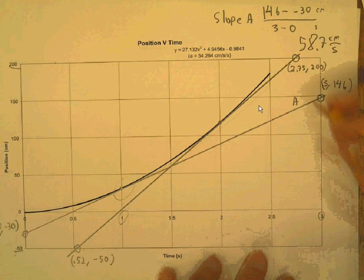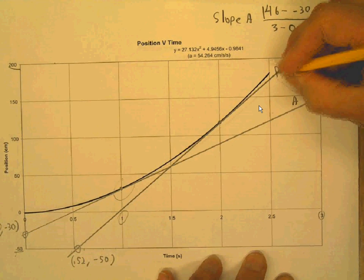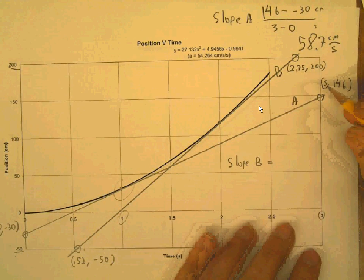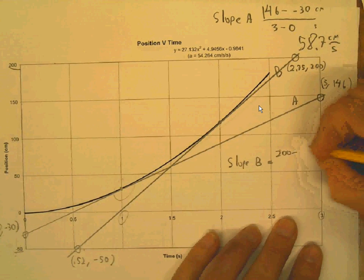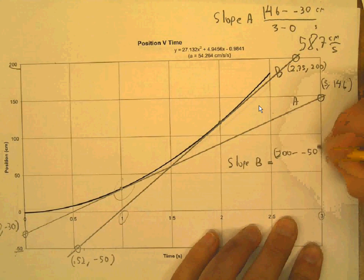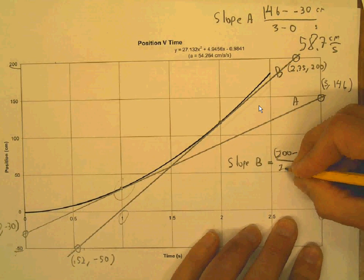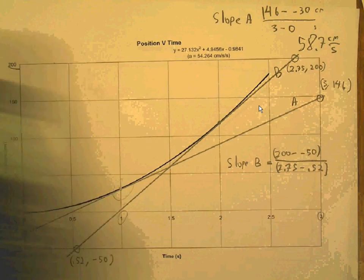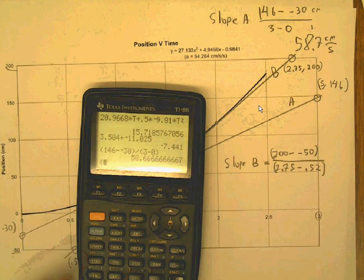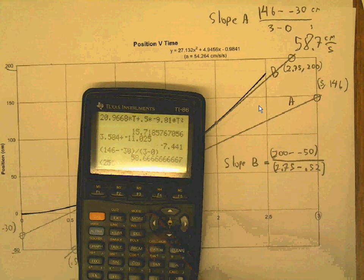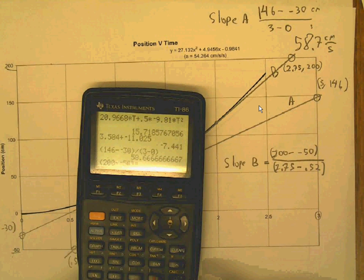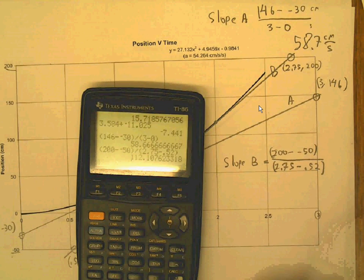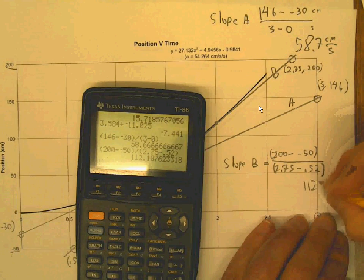And now this slope, I'm going to call this line B. Slope B is equal to the rise over the run. So what is that? 200 minus a minus 50, right? The rise is all 250. And the run is 2.75 minus .52. So that is 200 minus a negative 50 divided by 2.75 minus .52. And this is 112 centimeters per second.